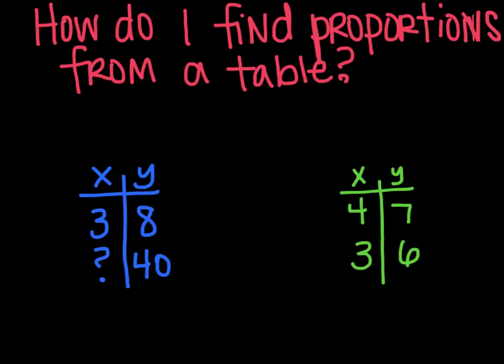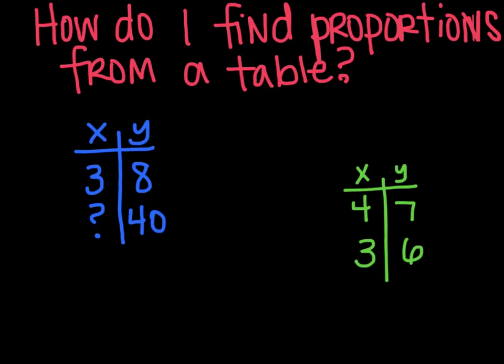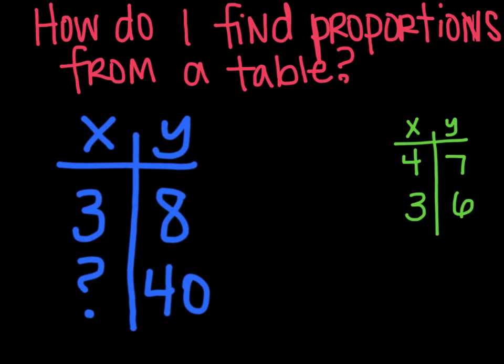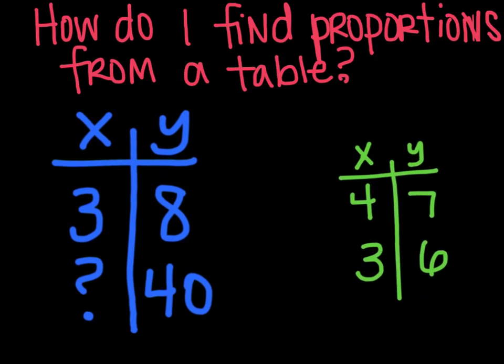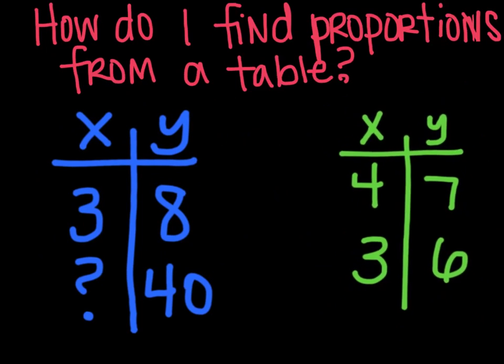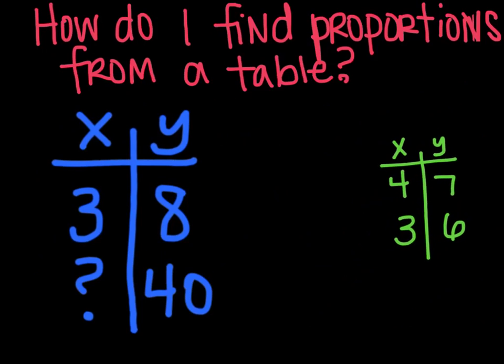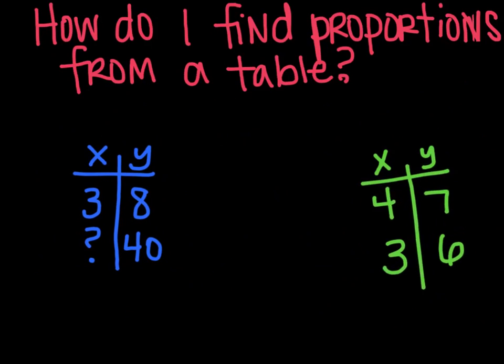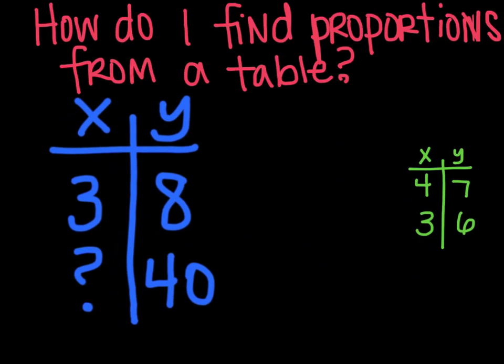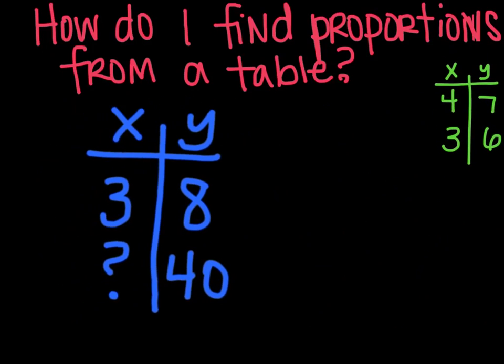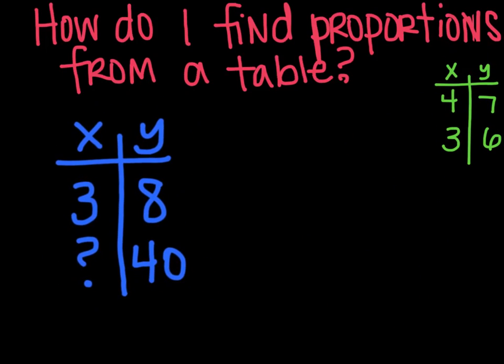How do I find proportions from a table? We have two different types of situations. The blue one is where you're trying to find a value. And then the green table is when you're trying to find if two are proportional or not. And we've actually done things like the green table before. So we'll do the blue one first and we'll save the green one for after. So in this case, it says you want to find the proportion.